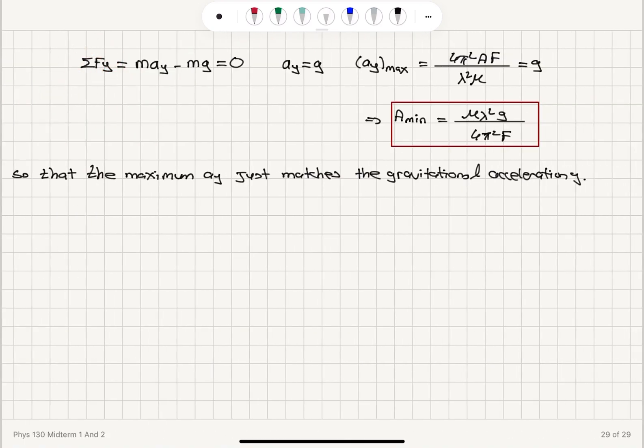So the net force on the y-axis is zero, so that the ant will become weightless. m ay will be equal to mg. So ay must be equal to g.